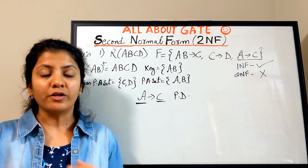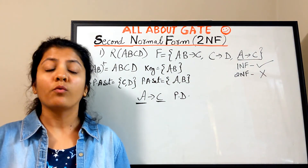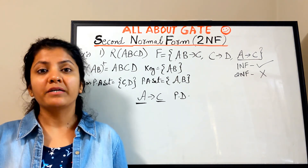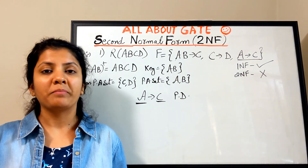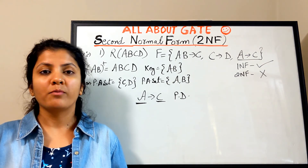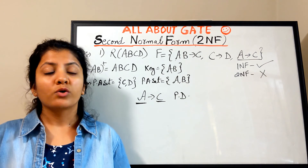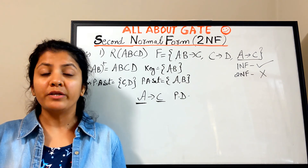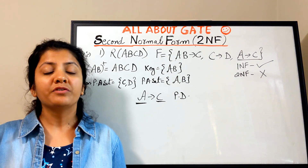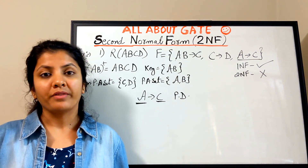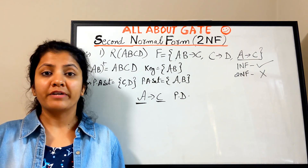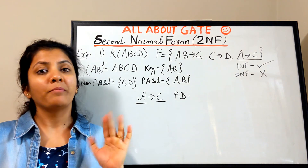So we have seen what second normal form is, how to define it, what partial dependency is, and how to determine the normal form of a relation. In the next video I will explain third normal form and the type of dependency that defines it. Do share the video with your friends. See you very soon!